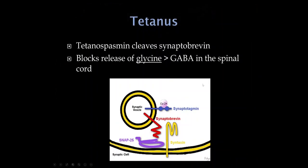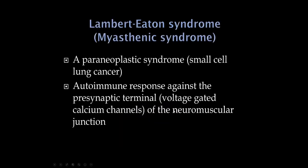Tetanus also affects snare proteins, but the problem is cleaving synaptobrevin. This mechanism is involved in release of other neurotransmitters, so in tetanus, blocking synaptobrevin prevents release of glycine in spinal cord pathways and GABA in the brainstem. Both are inhibitory neurotransmitters, and when lost in the spinal cord, we get excessive muscle tone and activation. This is not strictly a neuromuscular junction disorder, but it fits to mention here since we've talked about the snare protein mechanism.